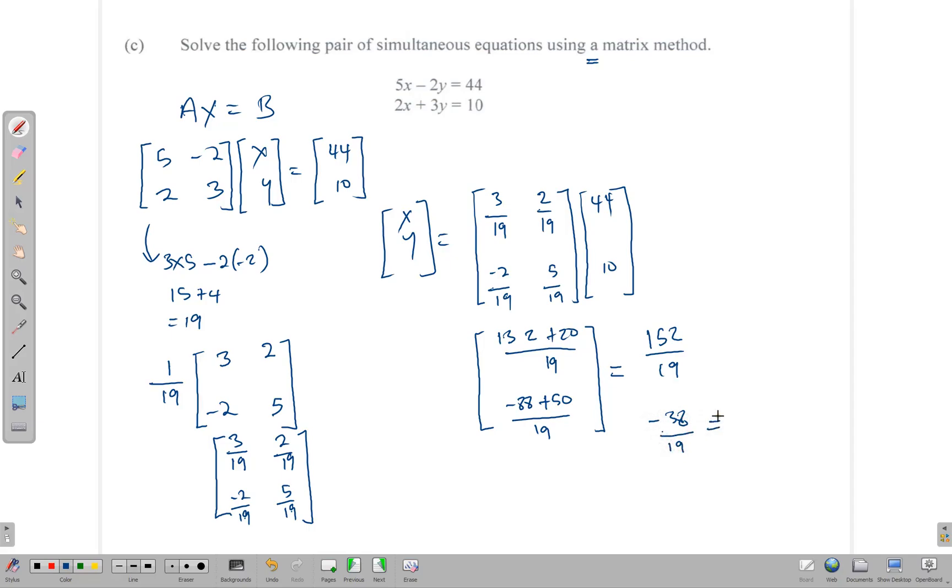And in the next row, negative 88, plus 50. All of that over 19. And that gives us 152 over 19, and negative 38 over 19. And of course, doing this division here gives us a negative 2. And punching this in your calculator gives you 8. So x is equal to 8, and y is equal to negative 2. And we have solved our simultaneous system by using a matrix method.